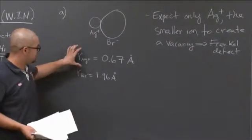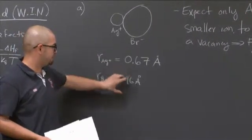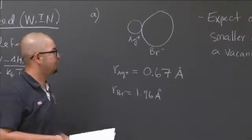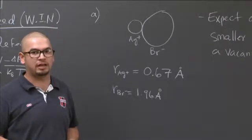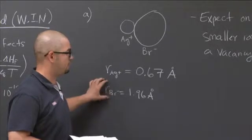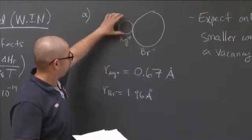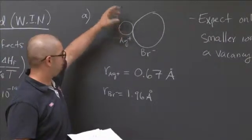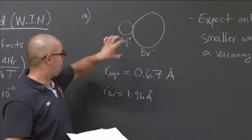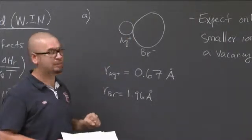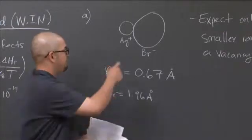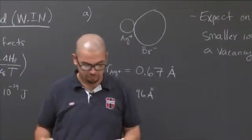Now, if I was given a cation that had a similar radius, I wouldn't know if I could argue the fact that this will form a Frankel defect or not. Because the conditions are that you have to have dissimilar radius between your cation and your anion. The fact that your silver is small, it has more freedom to hop around. It requires less energy for this smaller atom to start hopping around your lattice site without major penalty compared to your bromine ion.